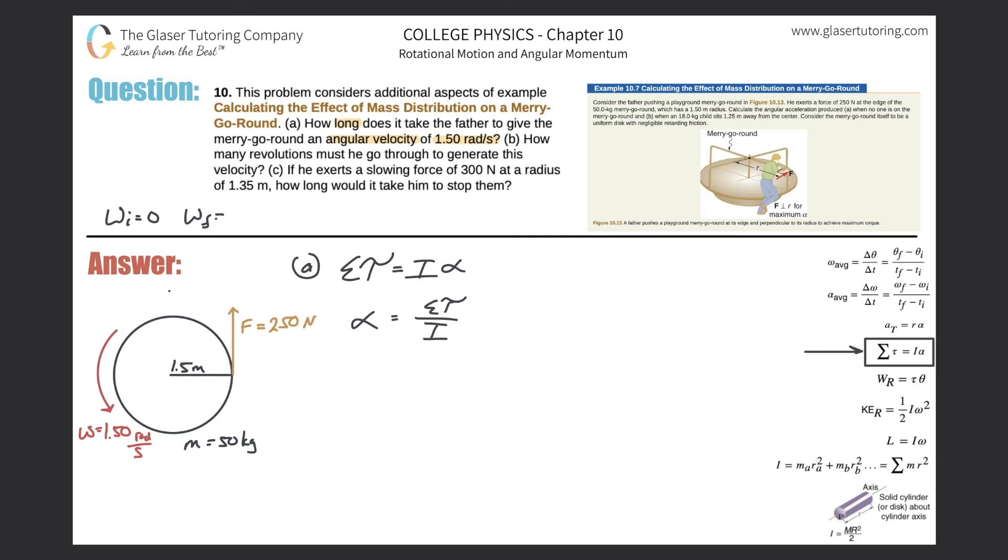So the initial angular velocity is zero. The final angular velocity is going to be 1.50 radians per second. The time we're trying to find is a question mark, and I do have alpha in this equation. So what I'm trying to do is think of an equation that relates these items together. This is very similar to the linear analog. The final velocity is equal to the initial velocity plus the acceleration times time.